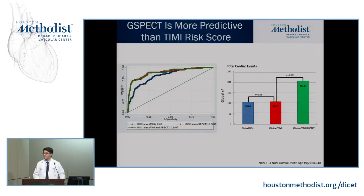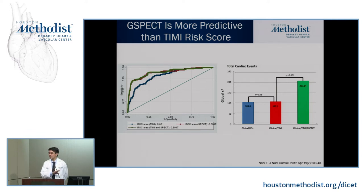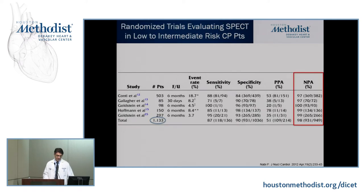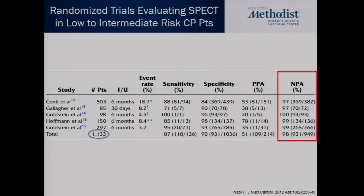Question from the audience: How does that compare to patients that already have known coronary artery disease, like prior bypass? The answer: this data is mostly from the acute chest pain population of patients without known CAD — most patients with known CAD are excluded from these trials. These are mostly patients who come in without any prior history, and in the CAD population, the diagnosis is already there; it's about figuring out whether they have ischemia or not.